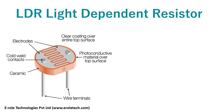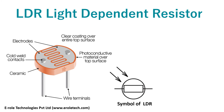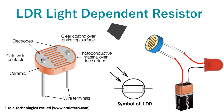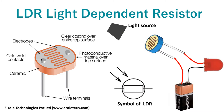This is the symbol of LDR. Now, suppose we have an LDR, a battery, and an LED. We will connect the battery with the LED through the LDR. The LED will not glow unless light falls on the LDR, and it will turn off in the absence of light.